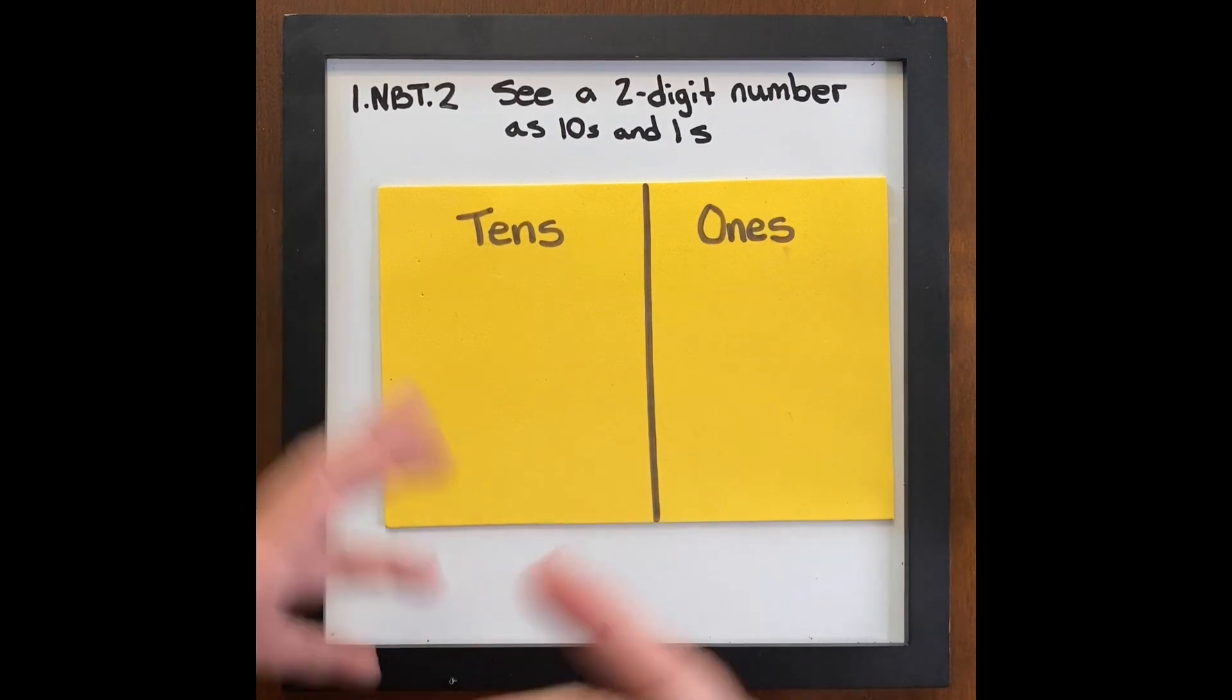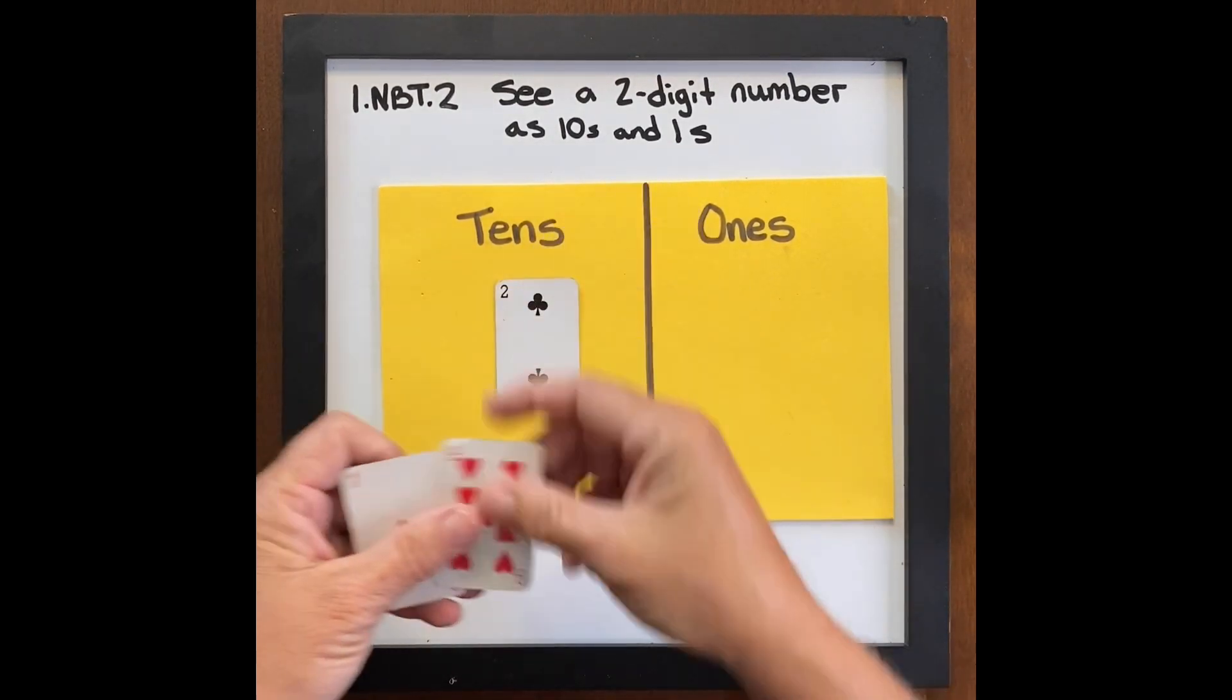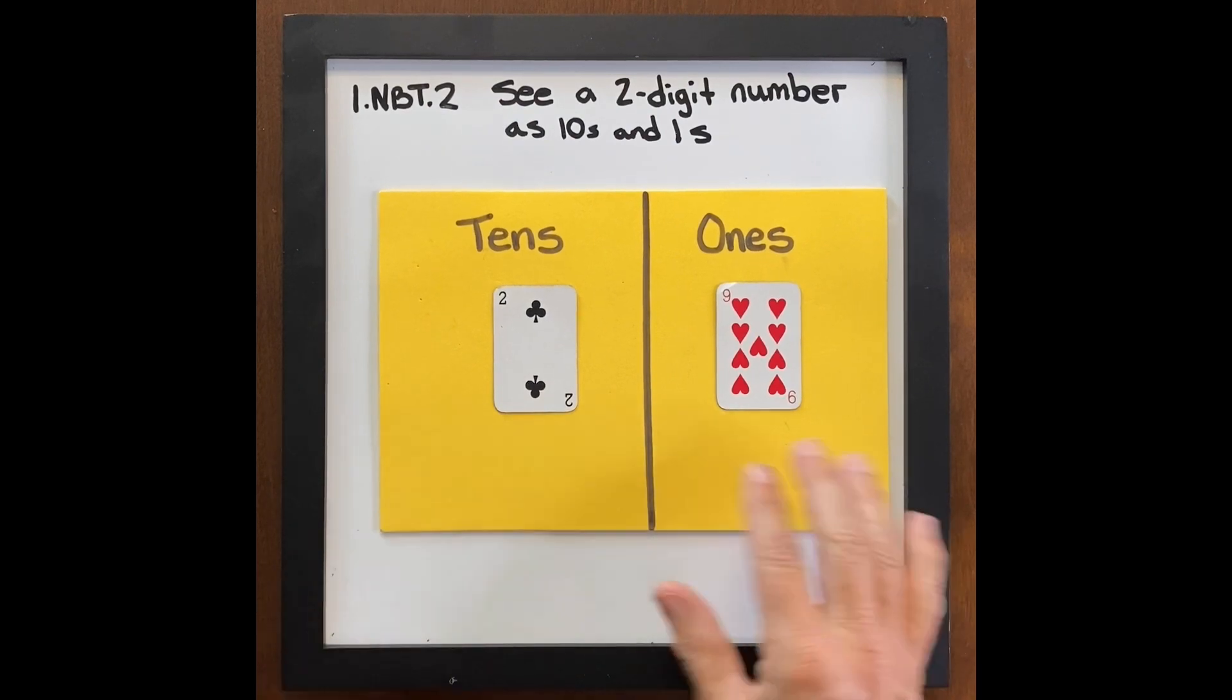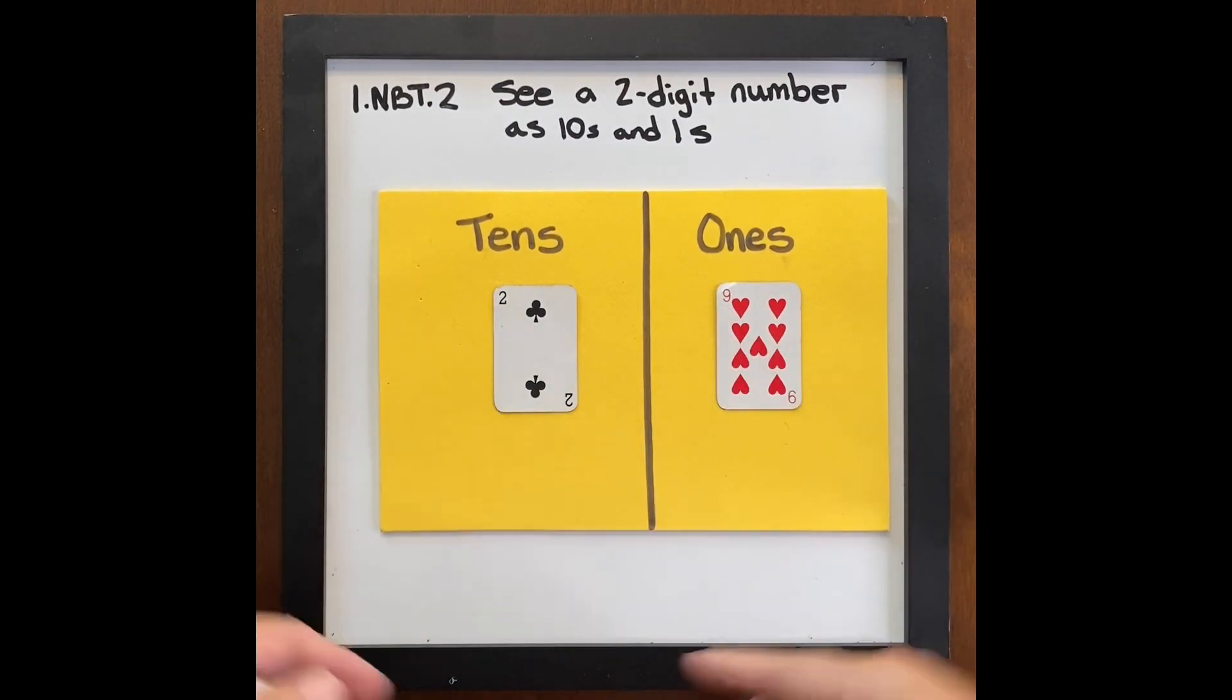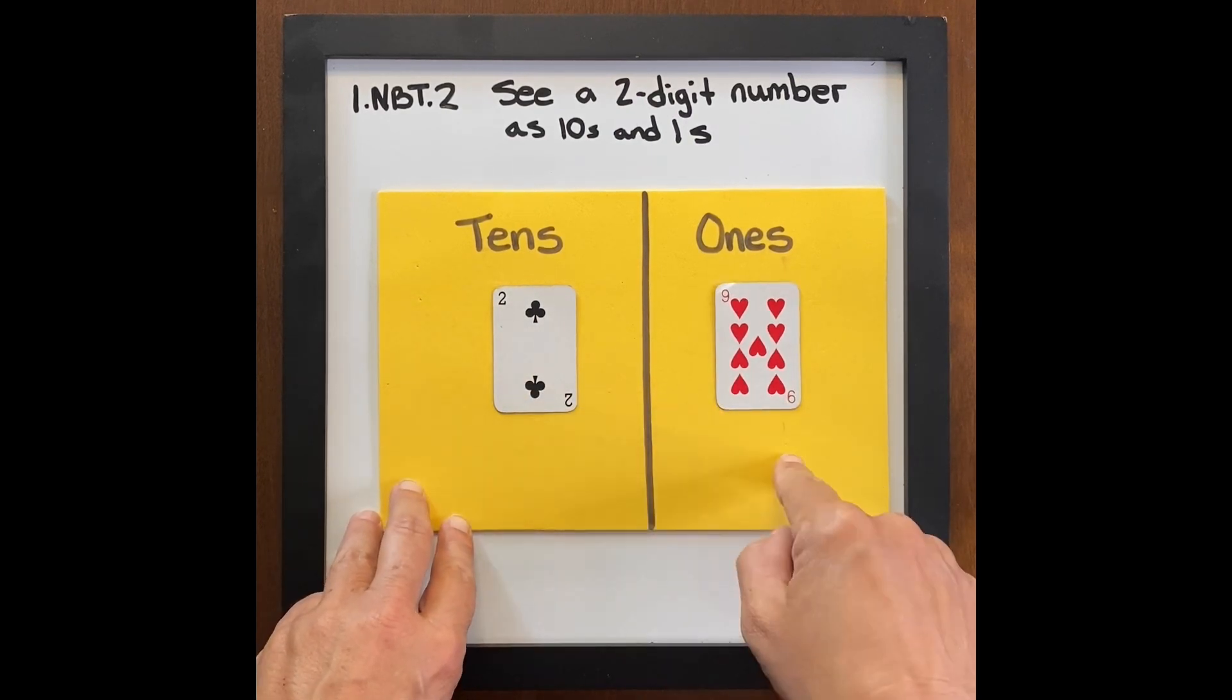And then they understand that process instead of just saying how many tens are in this? Great, two. We want to have a little bit more meaning behind it. Two tens nine ones. Twenty-nine.